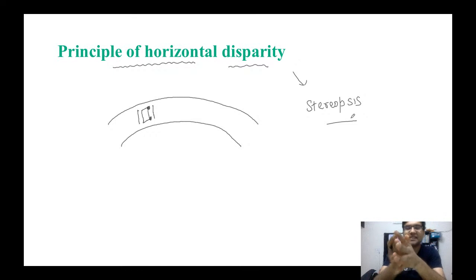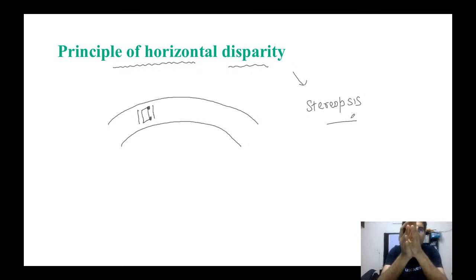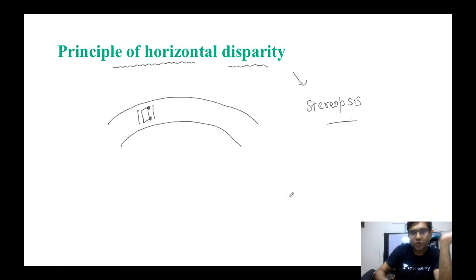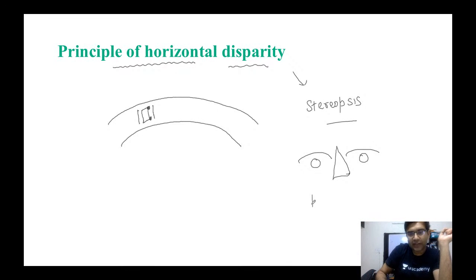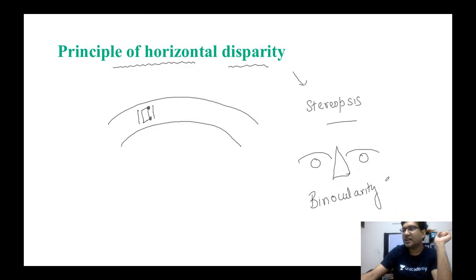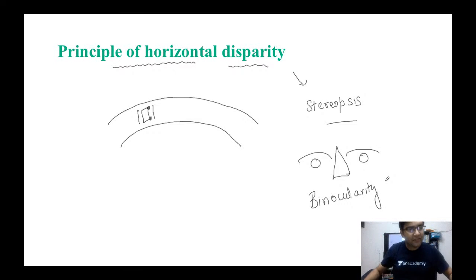The second point to remember is that whenever we have to perceive stereopsis, we should be able to see with both eyes. In Hindi: dono aankhon se hume dekhna hai tabhi hum stereopsis dekh sakenge. So binocularity is essential whenever we have to perceive stereopsis.